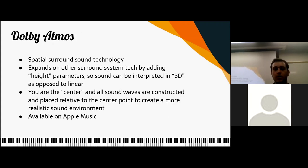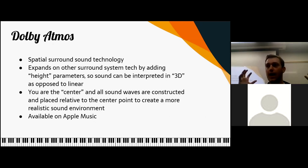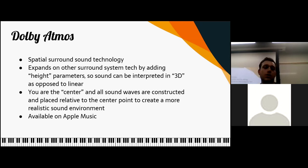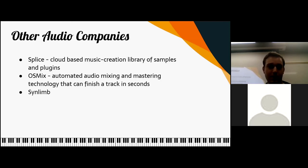Dolby Atmos — it's kind of 3D sound. Panning is when you have sound in two dimensions: left and right. With 3D sound, you're adding a height parameter. So if a basketball is bouncing up and down, you can hear it moving in that direction too — not just side to side. By adding height parameters, we can interpret sound as if it's in 3D. You are the center and all sound waves are constructed relative to that center point, creating a more realistic sound environment. Available on Apple Music.